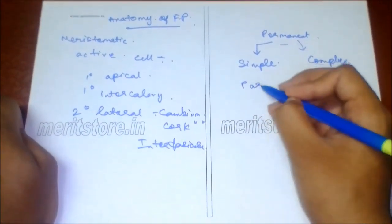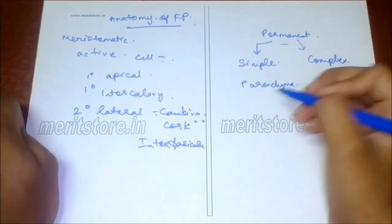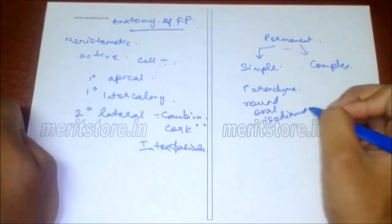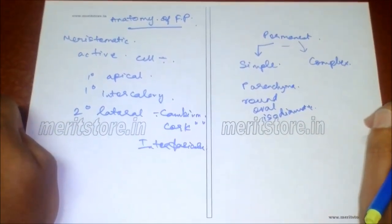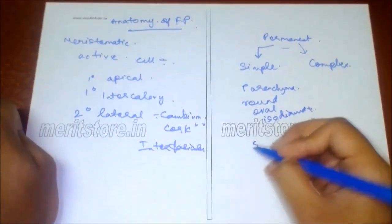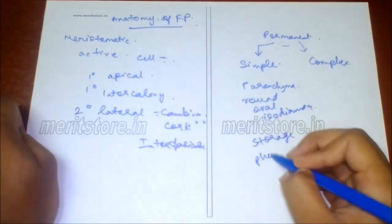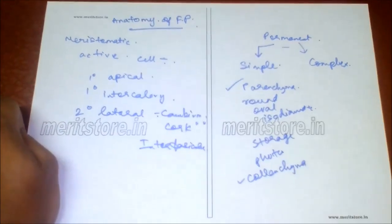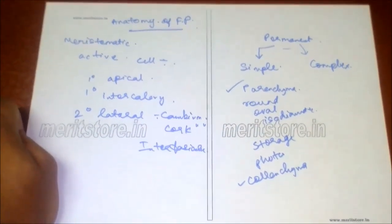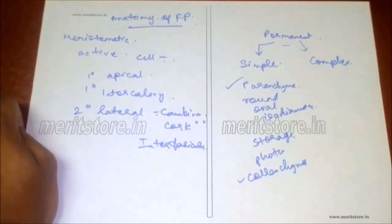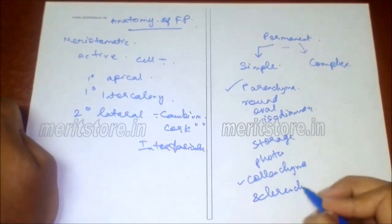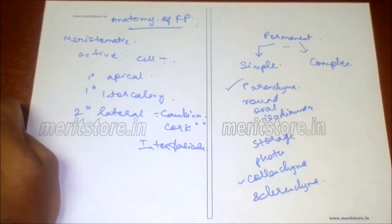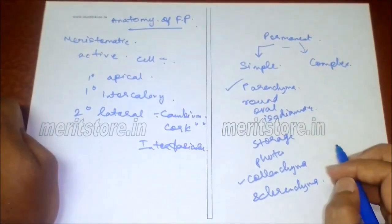Simple permanent tissues include parenchyma (living, round/oval/isodiametric cells with or without intercellular spaces; function: storage and photosynthesis; contains chloroplasts), colenchyma (may or may not contain chloroplast), and sclerenchyma (highly lignified, either fibers or sclereids, dead cells with lost protoplast).